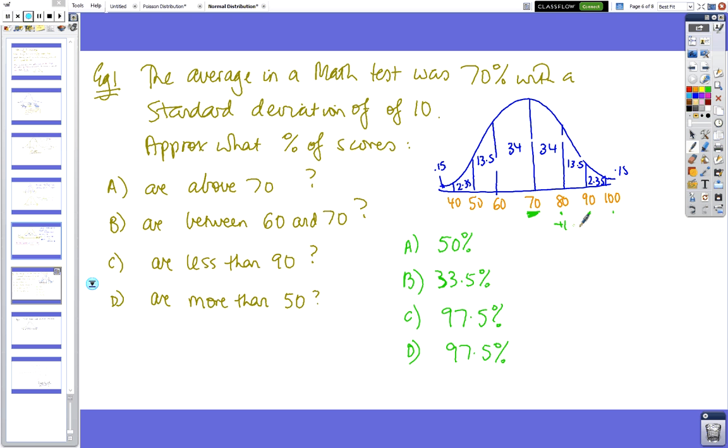plus 10 is 100. So that's your plus 1, your plus 2, your plus 3, and then your minus 1, your minus 2, minus 3. So what's the score above 70? Well, that's the average, so it's going to be 50%. What scores between 60 and 70? It's going to be 34%.